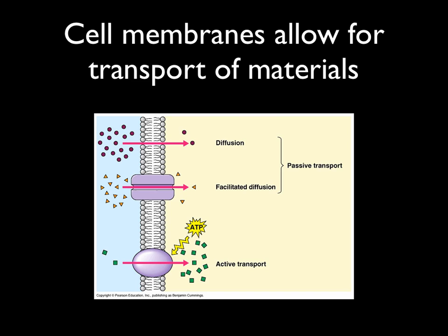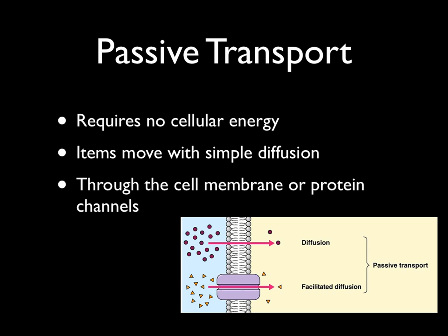The cell membrane allows for the transport of materials into and out of the cell — generally bringing in useful items and pushing out items that are not useful, like metabolic wastes. Cells do this by a couple of different processes. The first is passive transport, which is passive because it doesn't require any energy from the cell. Passive transport happens when items move through or across the cell membrane using simple diffusion. This happens for small molecules because there are small spaces between the phospholipids — so ions, like the components of salt, or water molecules, can pass through those small spaces.